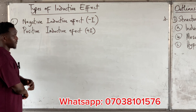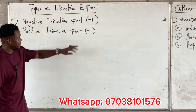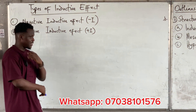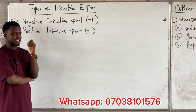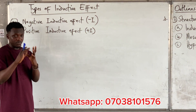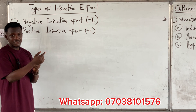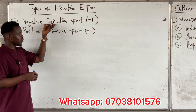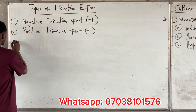We have types of inductive effects. You have the negative inductive effect, symbolized by minus I, and we have positive inductive effect, symbolized by plus I. Now, negative inductive effect is exhibited by atoms or group of atoms that, anytime they have been attached to a compound — attached to a carbon — tend to withdraw electrons from those compounds. So it is basically the electron-withdrawing nature of groups or atoms.